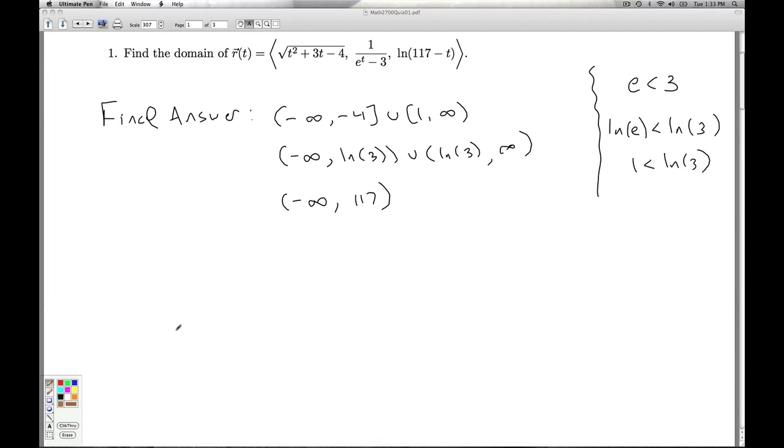So, if I go on my number line and try to sort all this out, I've got negative 4, 1, the natural log of 3, and 117. This is obviously not to scale, but it doesn't matter. We're just trying to figure out the overlap of all these things. The first set I have here is everything from negative 4 on down, including the negative 4, and then everything from 1 on up, including the 1. So that's what that interval looks like.